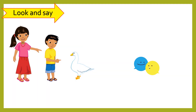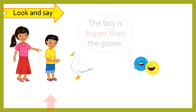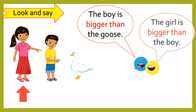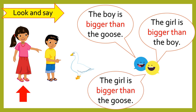These are what you can say. Listen and repeat. The boy is bigger than the goose. The girl is bigger than the boy. The girl is bigger than the goose.